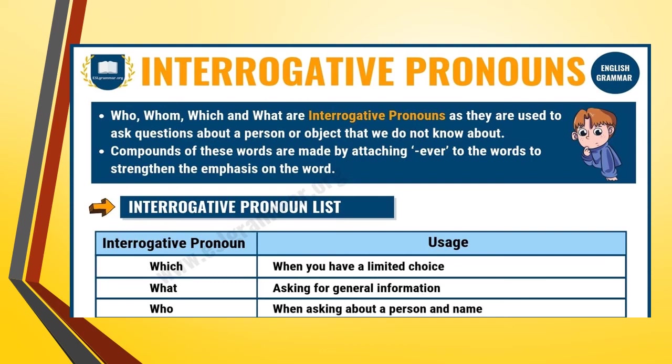Interrogative pronouns. From the very elementary level, we know that interrogative means questions. So those pronouns which ask questions are called interrogative pronouns. For example: who, whom, which, what. These are used to ask questions about a person or object that we do not know about. Sometimes these words are made into compounds by adding 'ever' — whatever, whoever, whichever. These become interrogative pronouns but they lay more strength or emphasis to the word. 'Which' is used when you have a limited choice. 'What' is asked for general information. 'Who' is used when you are asking about a person or name.